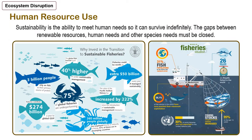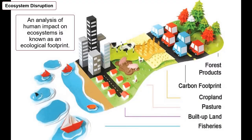Overusing resources can also unbalance ecosystems. Until the 1990s, people harvested fish at about the same rate that the fish reproduced. When newer fishing methods brought in larger harvests, the fish populations decreased rapidly and have not yet recovered. An analysis of human impact on ecosystems is known as an ecological footprint. This analysis accounts for people's use of food and natural resources such as land and water, as well as people's production of wastes and pollution.